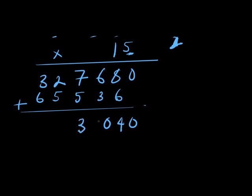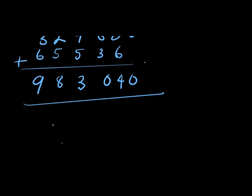You have 3, and carry 1 here, this will give you 8, that is 3 plus 5, that is 8. Then from here you have 3 plus 6, that is 9. So this becomes our answer that is 983,040.